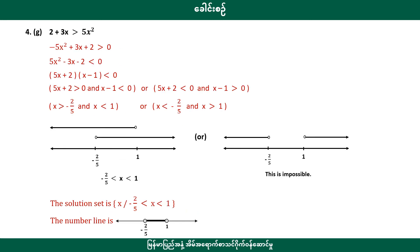Number 9 is 2 plus 3a greater than 5 squared. This is minus 5 squared. We can use minus 5. We can use minus 5, and we can write more than 1.